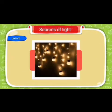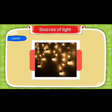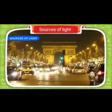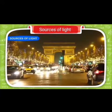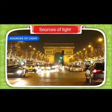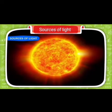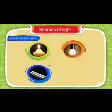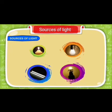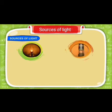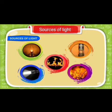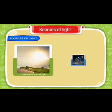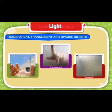Sources of Light: Objects which give us light are called sources of light. The Sun is the main source of light for our planet. Other sources include burning candle, electric bulb, tube light, gas light, oil lamp, safety lamp, torch light, fire, and flame.